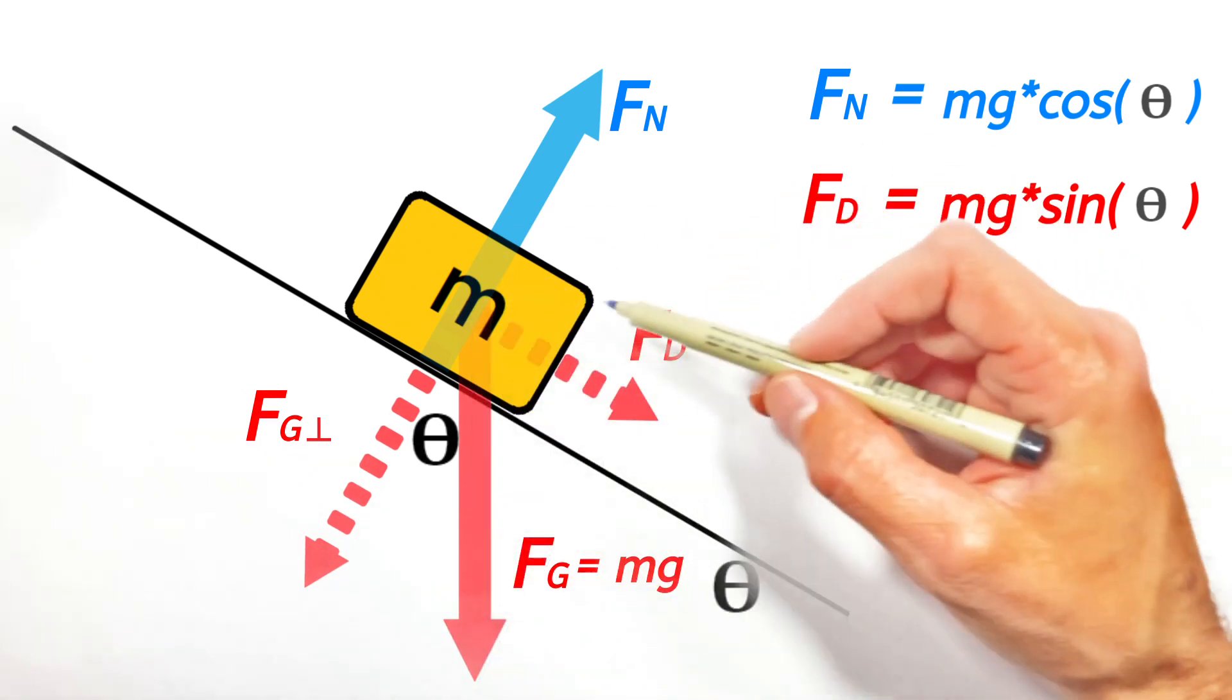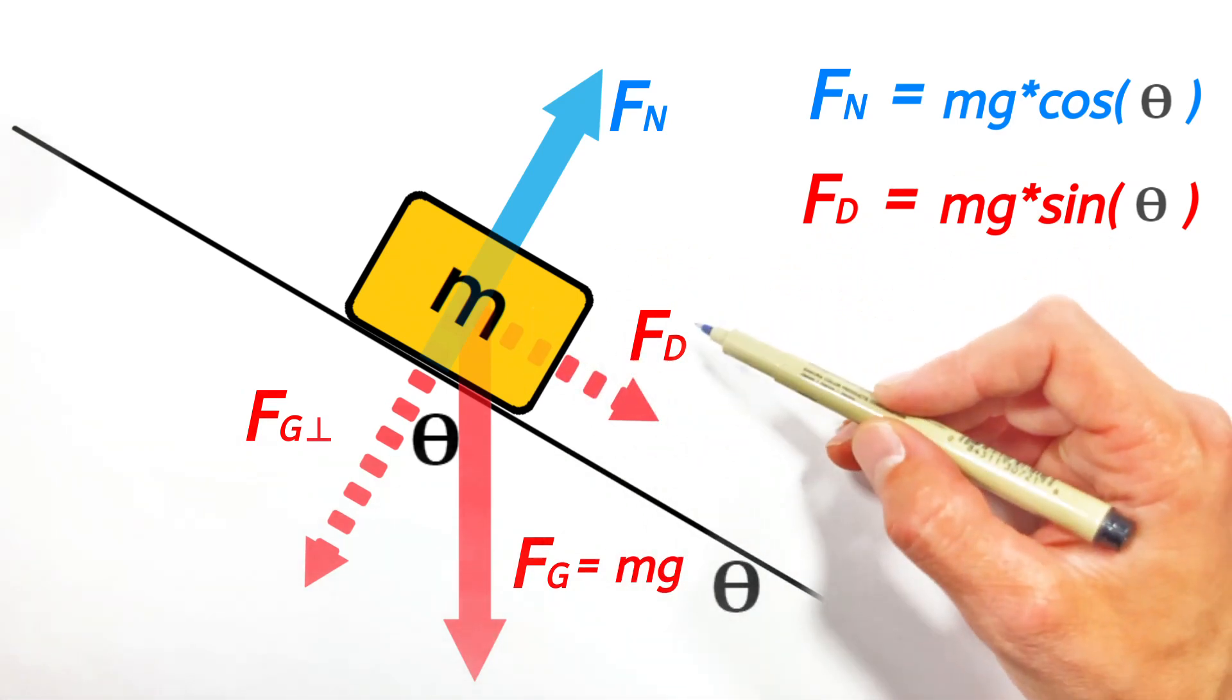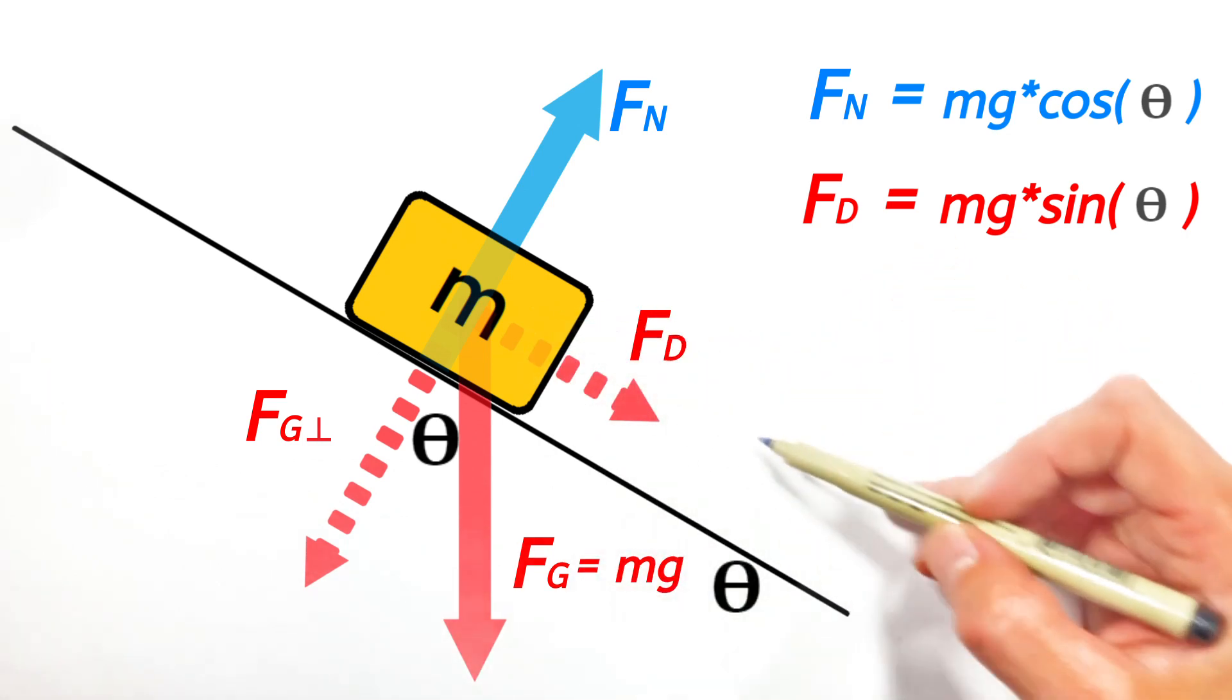So what we wind up with here is this block has an unbalanced force down the hill, which we're calling Fd. But realize that force down the hill is just the component of gravity that's parallel to the hill.